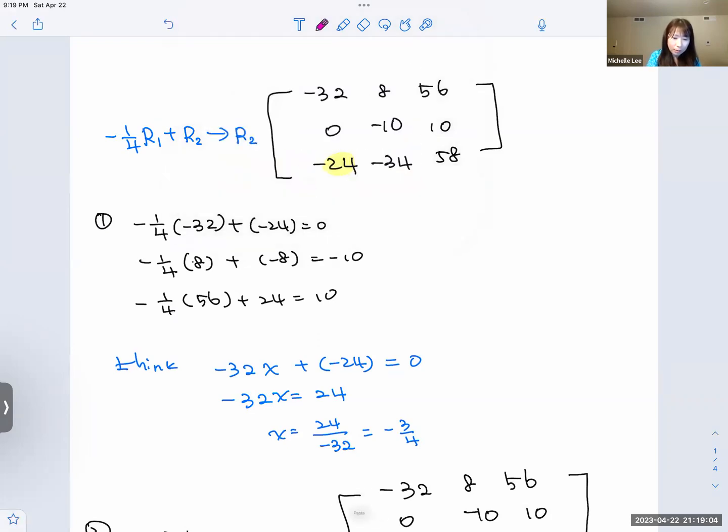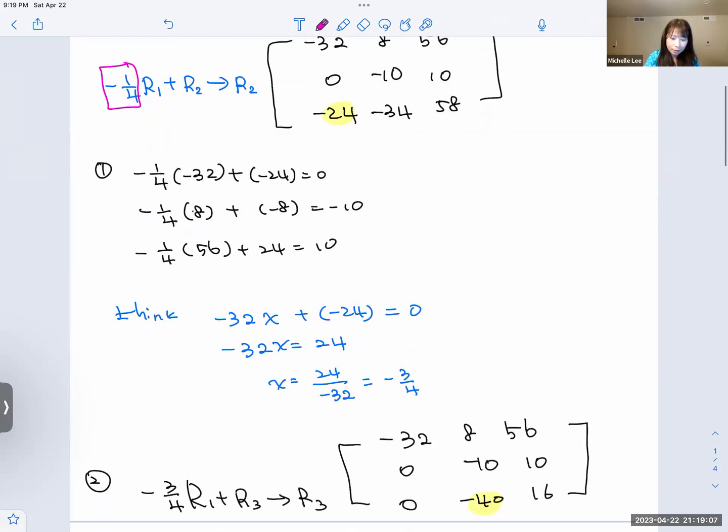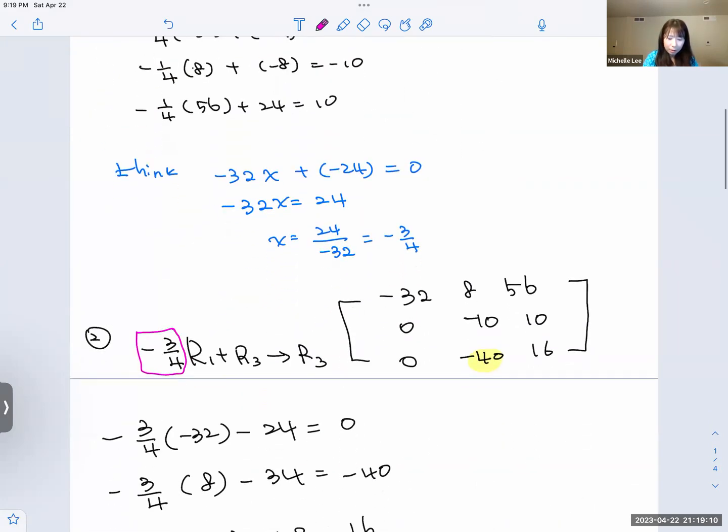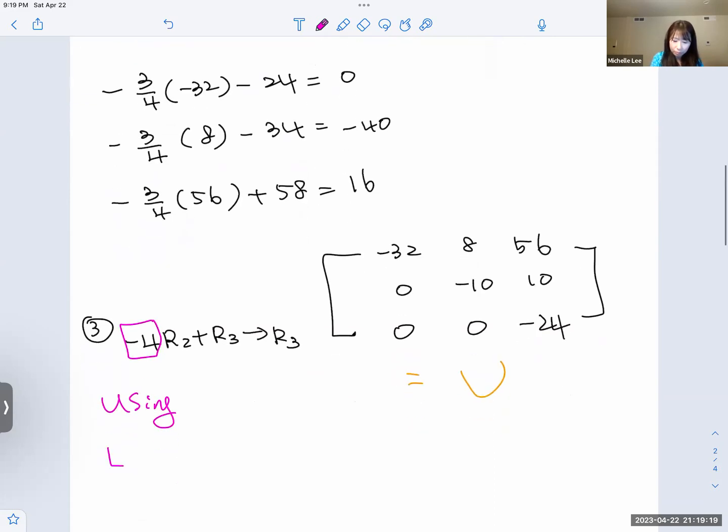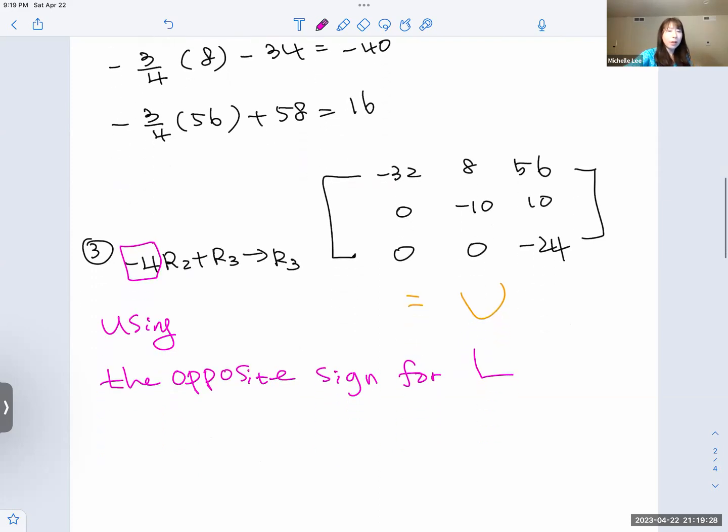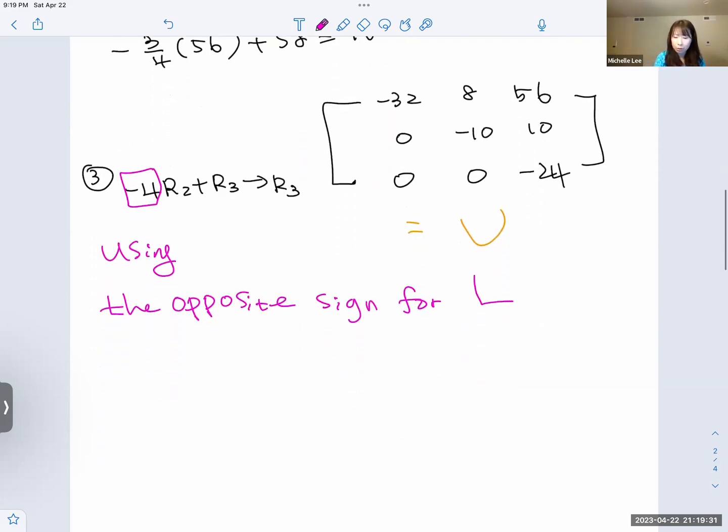Opposite sign for L. So we will get L equal to, which is, look, we are going to write down 1, 0, 0, and 1, 0, and 1 here all the time. How do you write? This is positive 1/4. We are using positive 3/4. We are using positive 4 there.